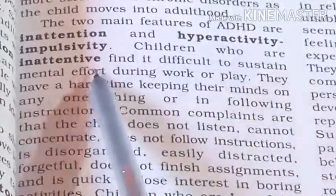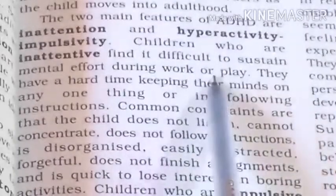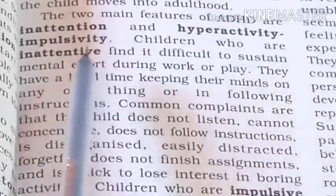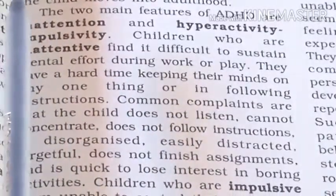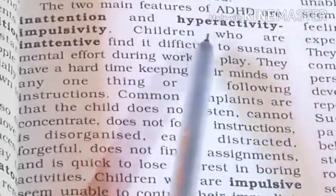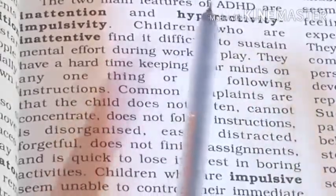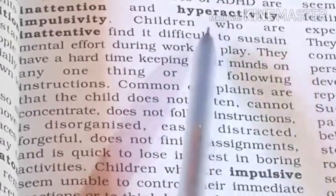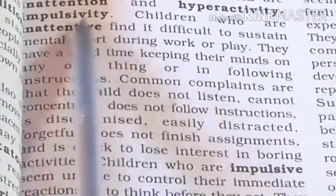Children who are inattentive find it difficult to sustain mental effort during work or play. Inattention means not being able to focus. The other feature is hyperactivity — they are very active and cannot sit in one place. Within a few minutes they become inattentive. The third feature is impulsivity.